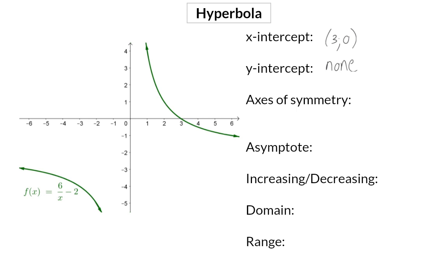As we've just mentioned, a hyperbola has two axes of symmetry. Firstly, the line y is equal to x plus that q-value of minus 2, and then y is equal to minus x plus the q-value.